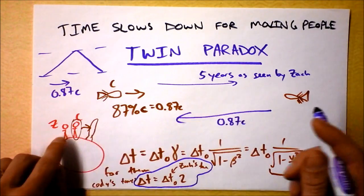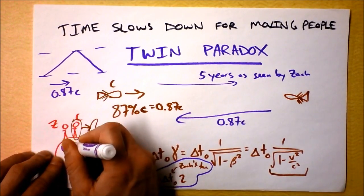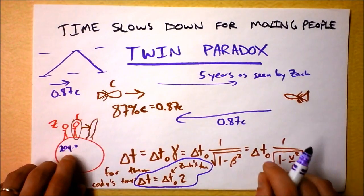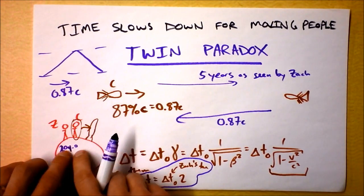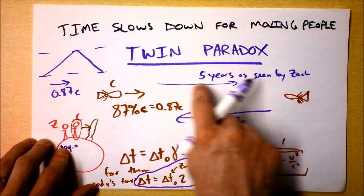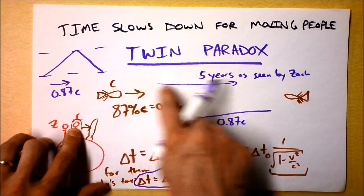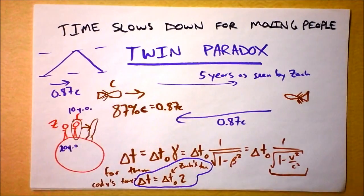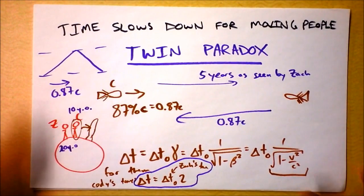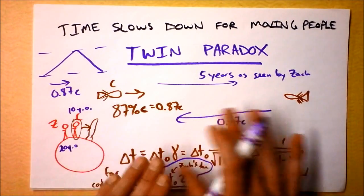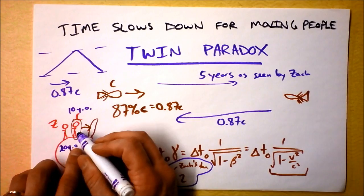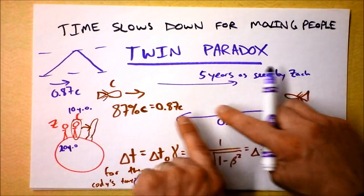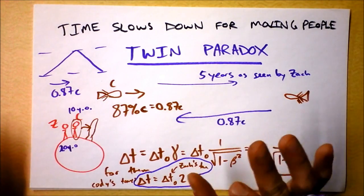And it takes him, I'm assuming he's gonna go at the same speed back again. 0.87c. It takes him another 5 years as seen by Zack. So, when Cody arrives back, Zack is 20 years old. Because he sees he spends 20 years for Cody to get there and back. Cody spent only 5 years to get there and another 5 years to get back. So, Cody is only 10 years old. That's not a paradox. Because, I mean, the issue is, this is a little bit weird, but I don't want this to be a paradox for you. The fact that they're different ages isn't a problem at all. Because they had different experiences.